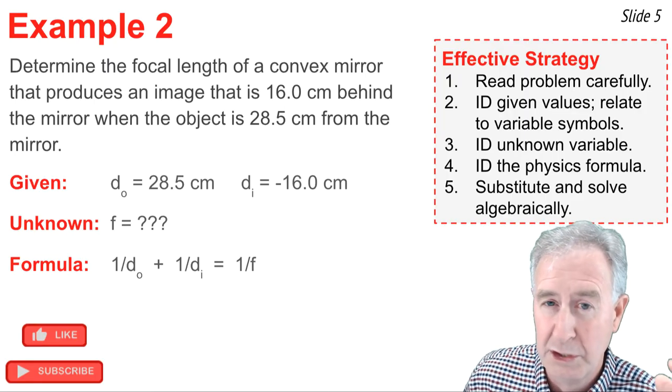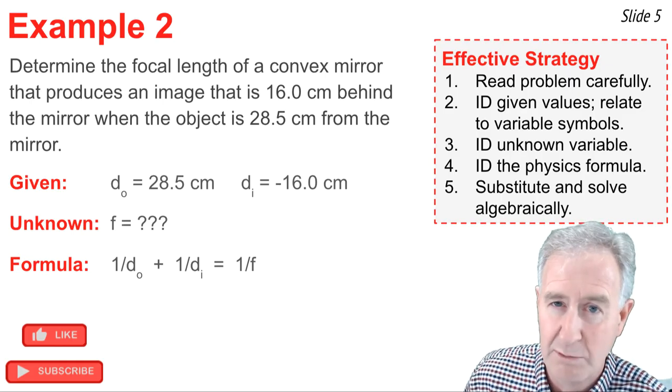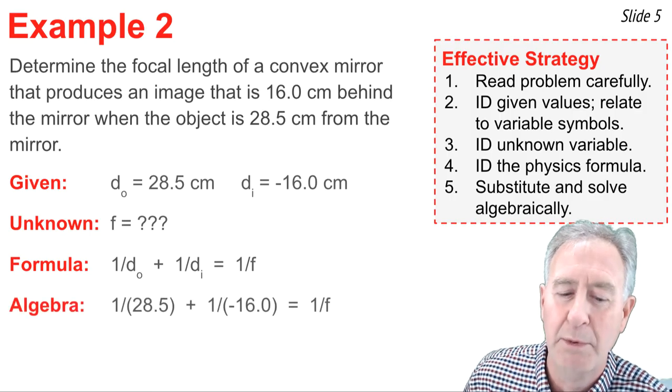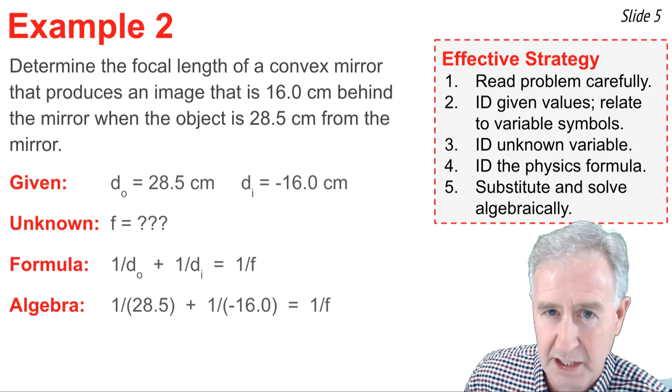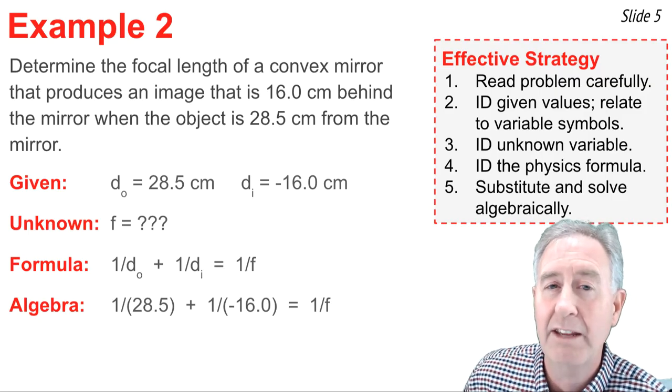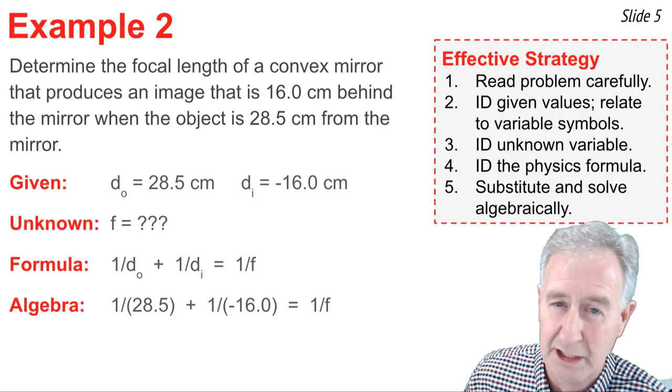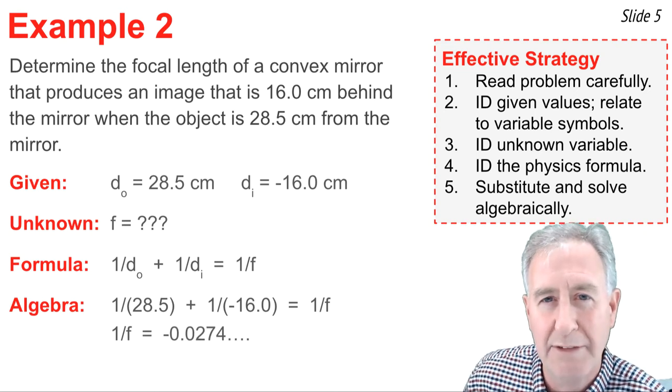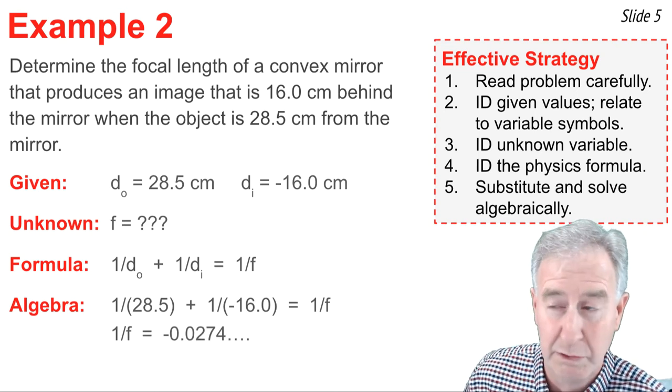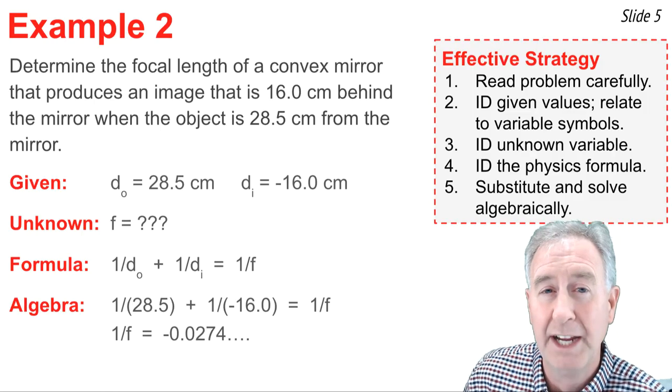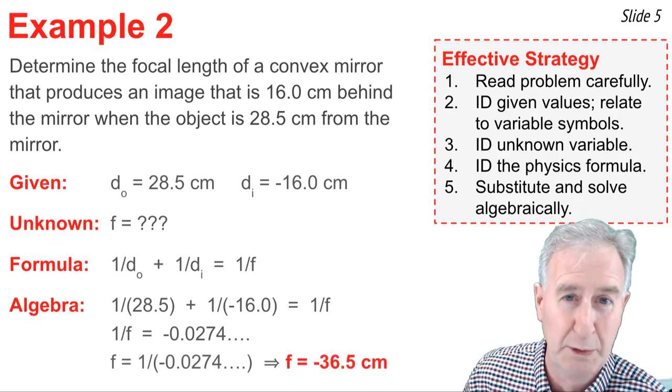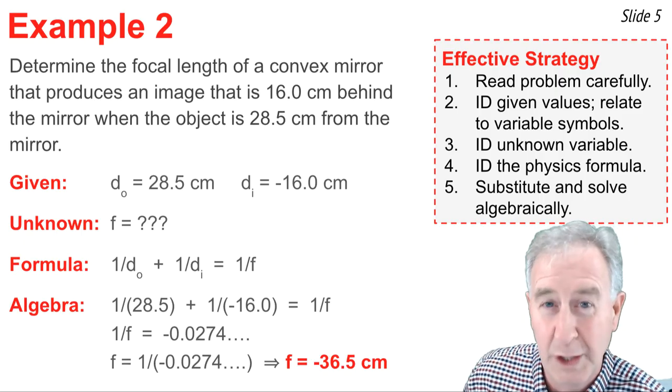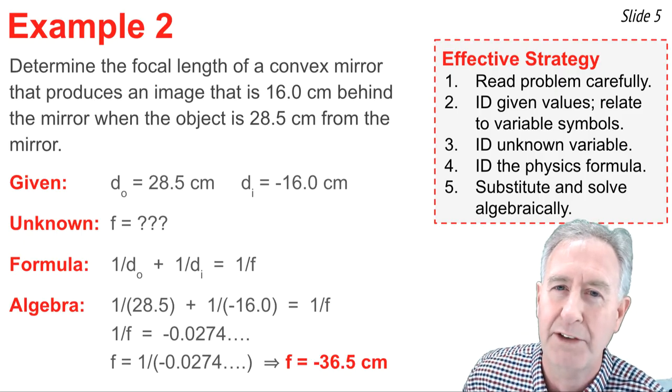Okay, now I have to do the last step, which is the only math step, substitute and solve. So I just have to take the work I've already done and apply it to this formula right here. So I'm going to say 1 over 28.5 plus 1 over negative 16, make sure you get the negative in there, equal 1 over f. Now I can evaluate the left side of the equation on my calculator, because there's nothing but numerical values there. So I evaluate the left side, and it comes out to be negative 0.0274. Now that's not f, that's 1 over f, according to how this formula is written. So to find f, take the reciprocal of both sides, the reciprocal of 1 over f is f, the reciprocal of 1 over 0.0274 negative is whatever your calculator tells you, and that's negative 36.5 centimeters.